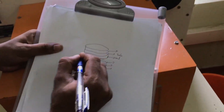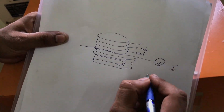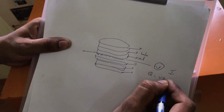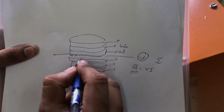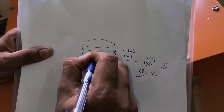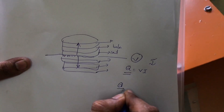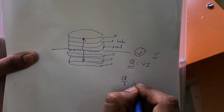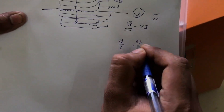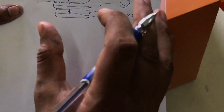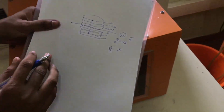We will be giving a voltage V to this coil and a current I will pass through it, so the heat produced is Q = V × I. Of the total heat Q produced in the coil, half passes in the lower direction and half in the upper direction. So the heat passing in one direction is Q/2, which equals the temperature difference ΔT divided by the thermal resistance R.